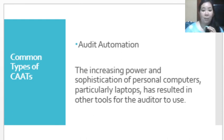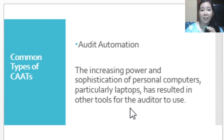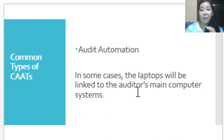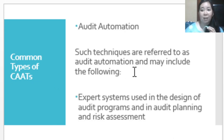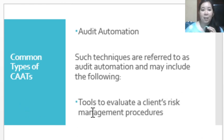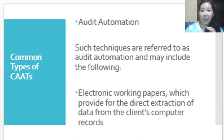Finally, there is audit automation. The increasing power and sophistication of personal computers, particularly laptops, has resulted in other tools for auditors to use. In some cases, laptops are linked to the auditor's main computer. Such techniques are referred to as audit automation and include expert system use in the design of audit programs, audit planning, and risk assessment. Audit automation also serves as a tool to evaluate the client's risk management procedure, as well as electronic working papers which provide for the direct extraction of data from the client's computer records.